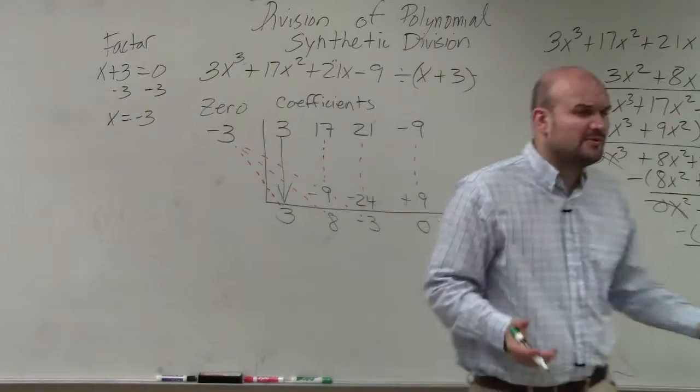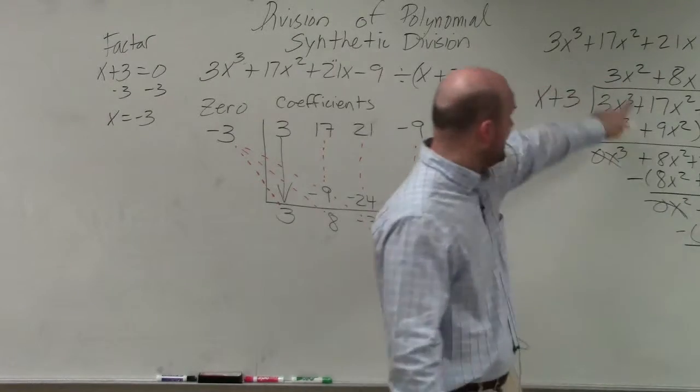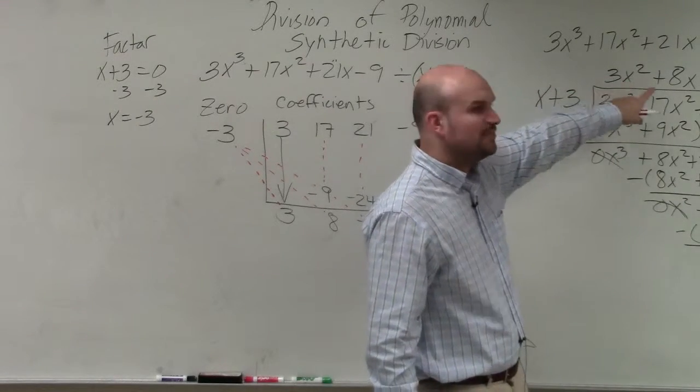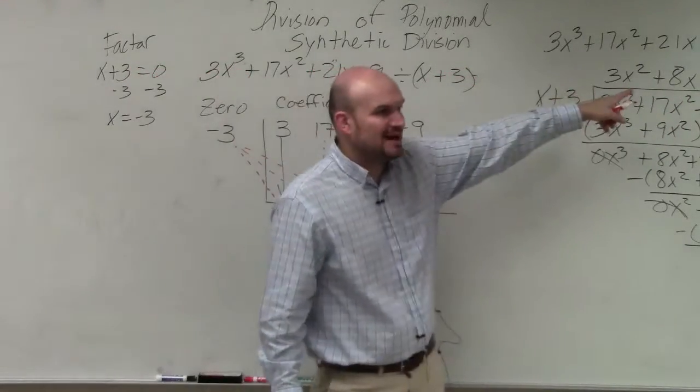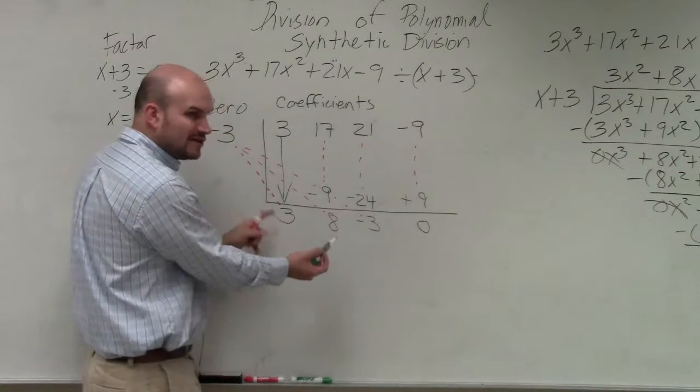So these are numbers. How do we write them as our answer? Because we know the answer is 3x cubed, 3x squared plus 8x minus 3. So then how do we write whatever our answer is? Well, hopefully if you guys compare these two answers, you see that these are the coefficients.